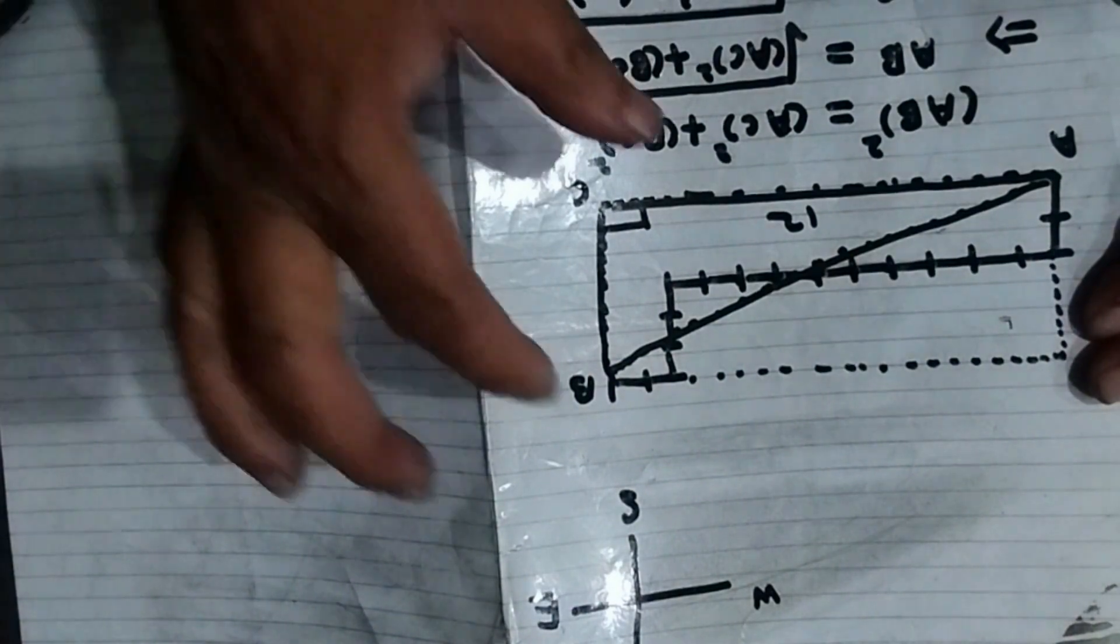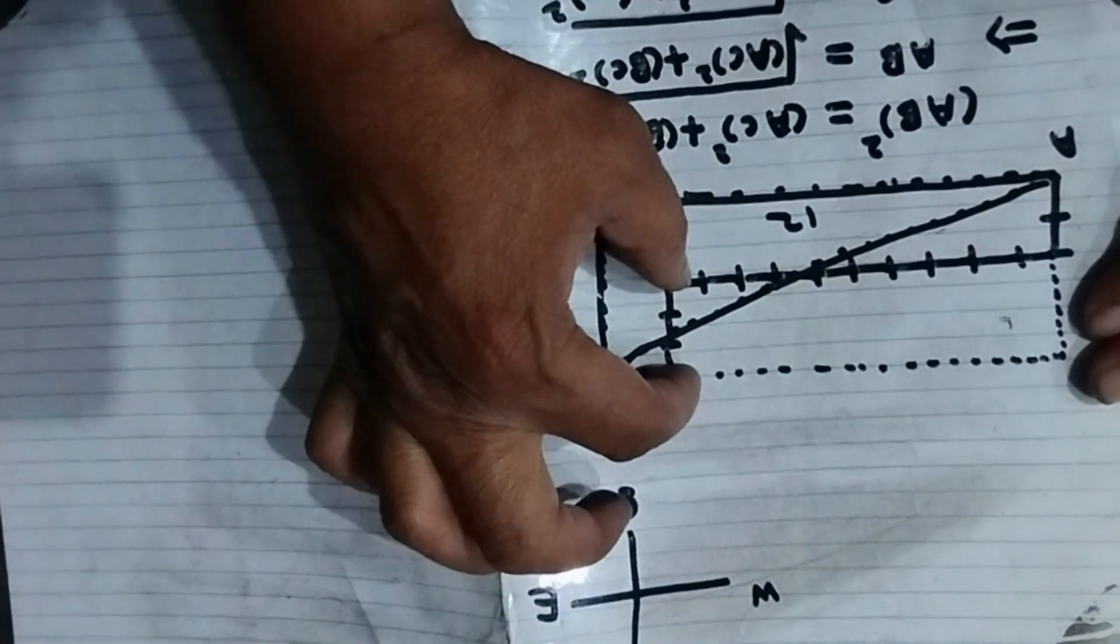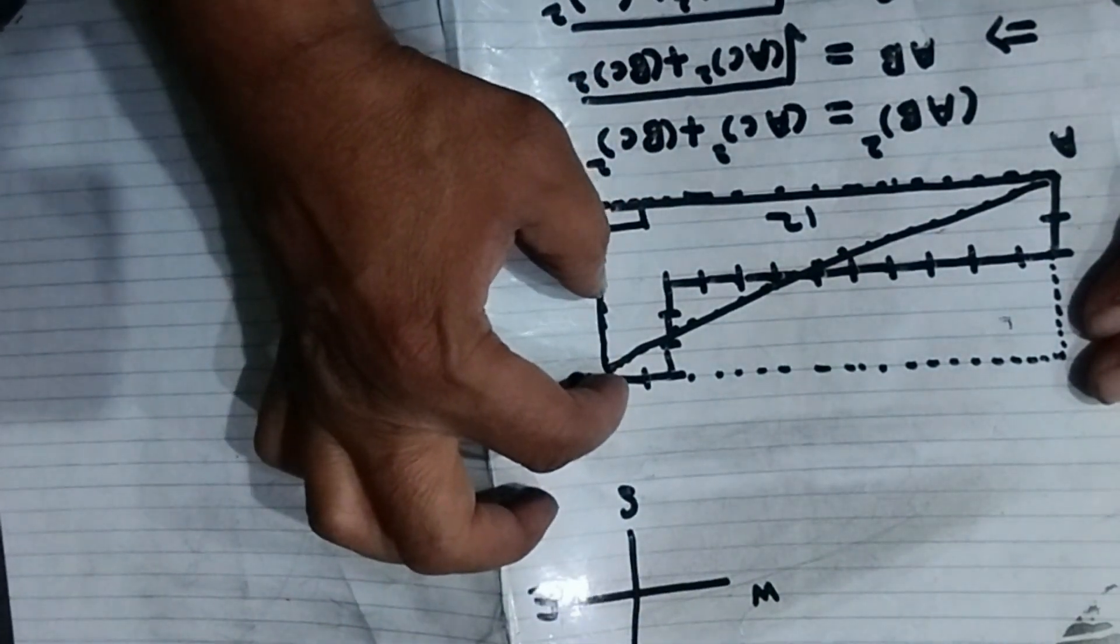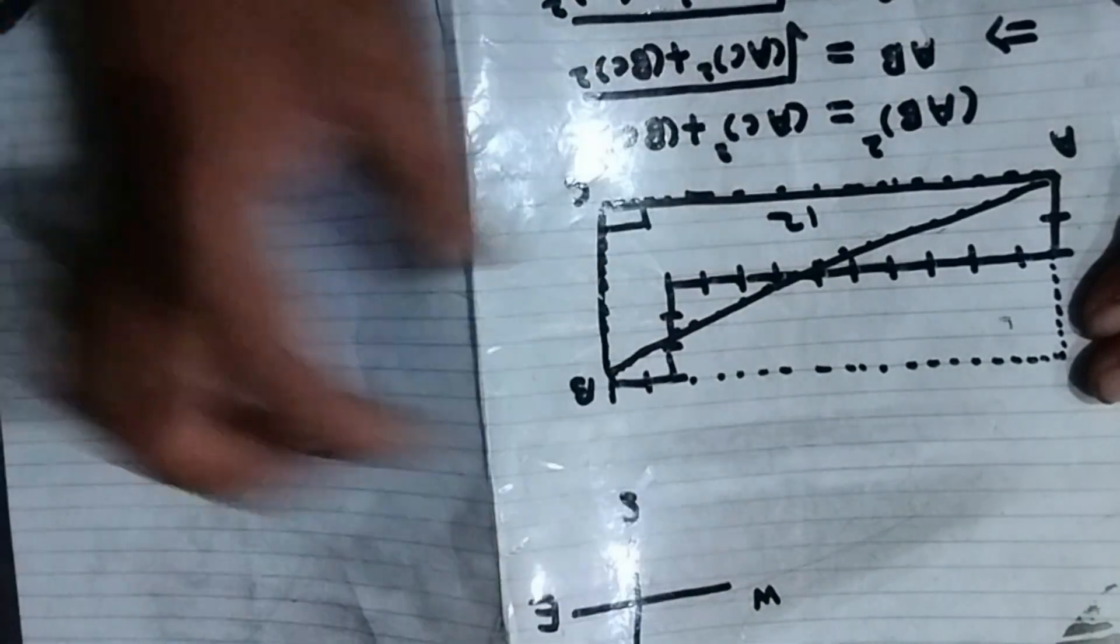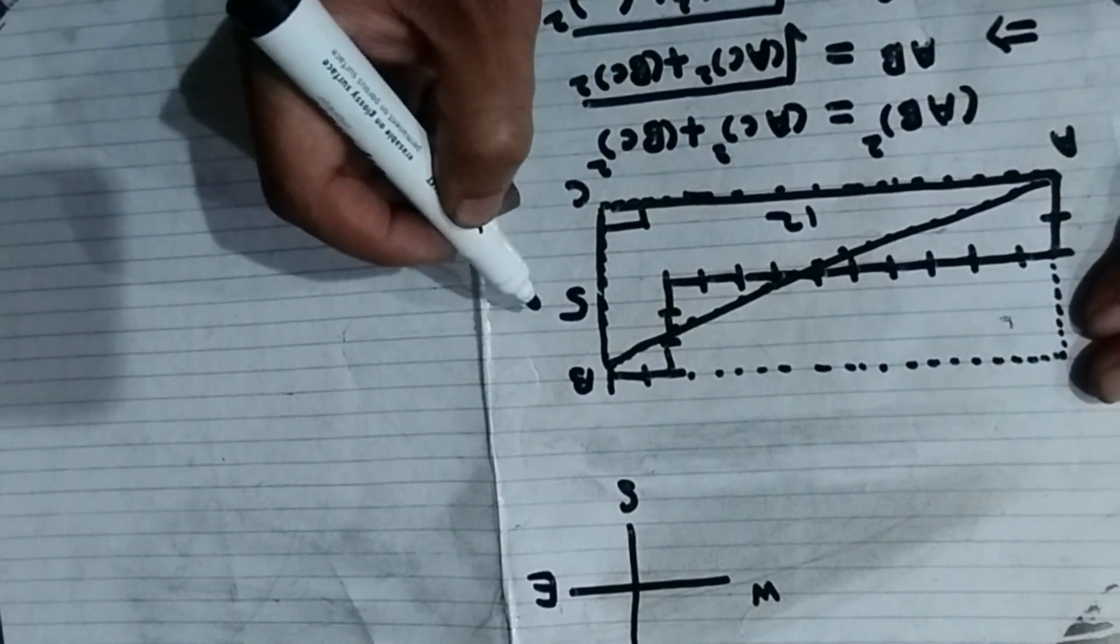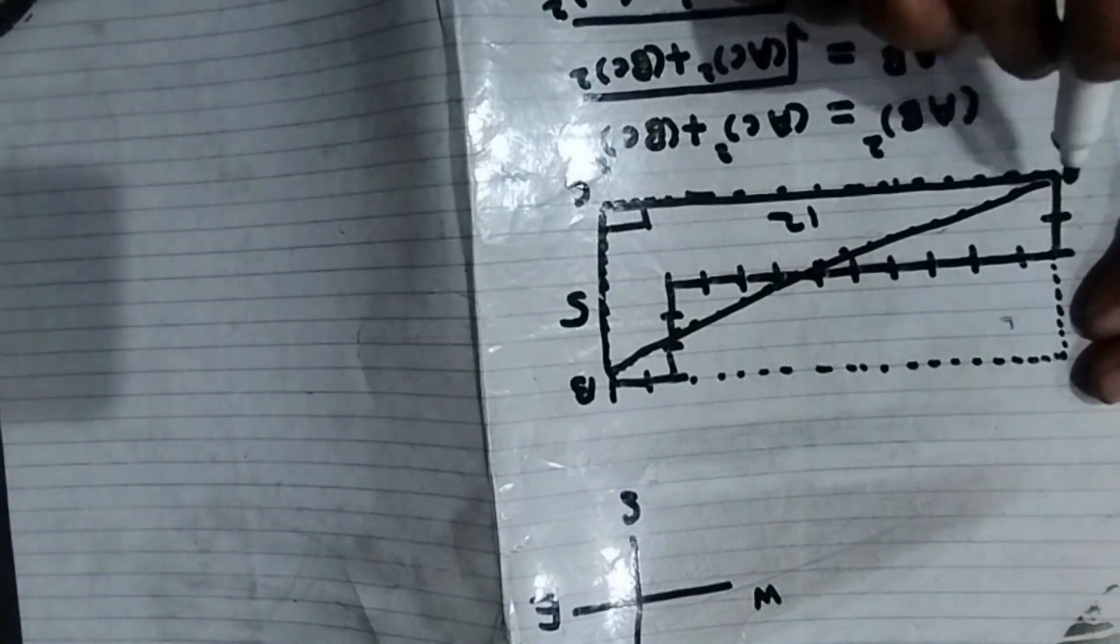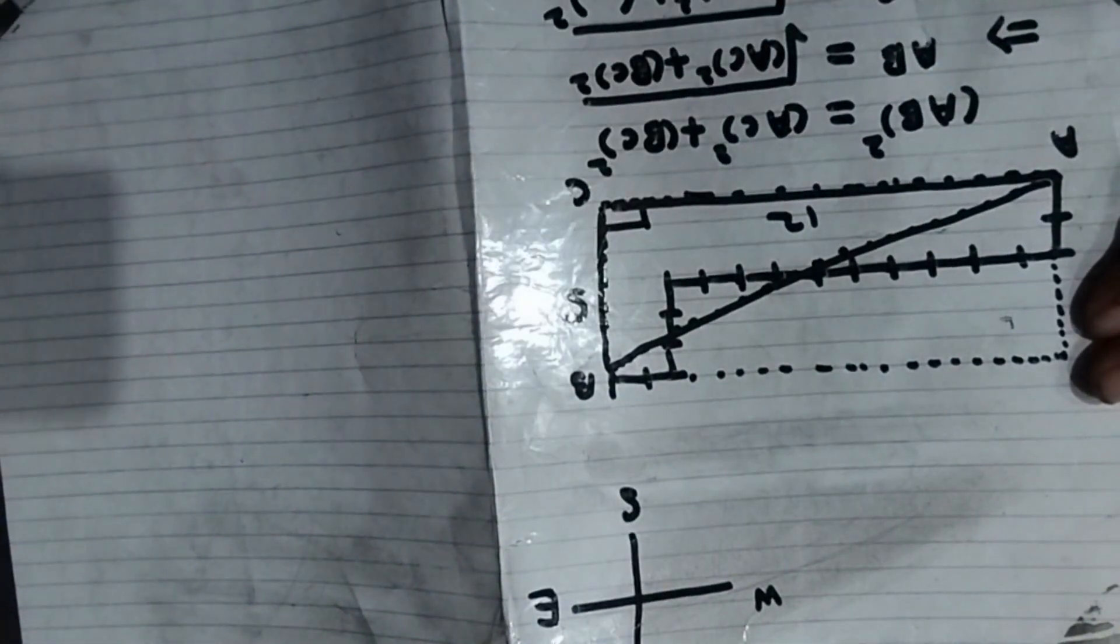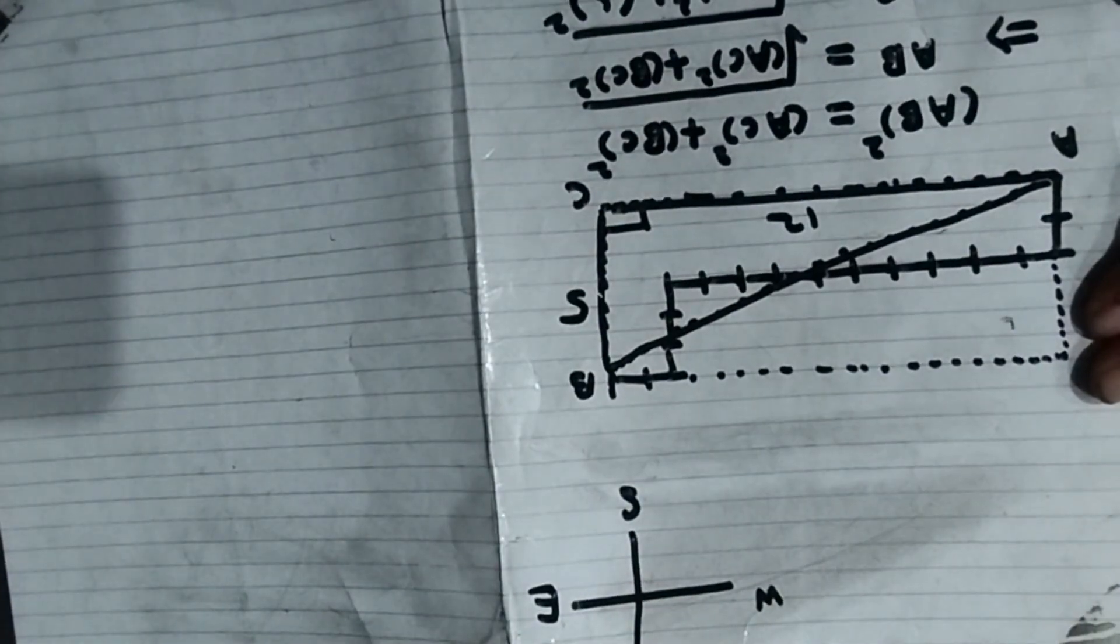Now for BC, look this up till here it is 2 kilometers and from there to here it is 3 kilometers. 3 and 2 it will make it 5 kilometers. So this is 5 kilometers. It means for AC 12 here and for BC 5 here.